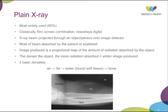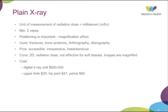There are four basic densities on x-ray: air, fat, water — which is made up by blood and soft tissue — and bone. Air has the least density so it's classically the darkest, followed by fat, then water, and bone as the most dense, absorbing the most and appearing whitest. That's similar for metal as well. The unit of measurement of radiation dose for x-rays is millisievert, which is important when looking at radiation doses.